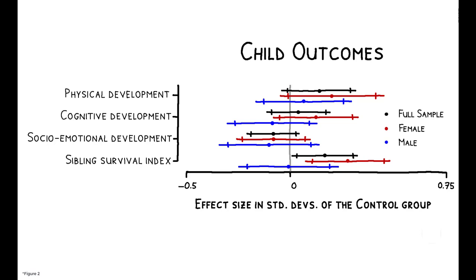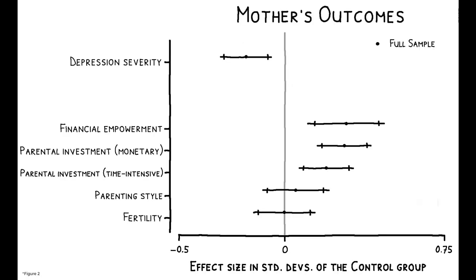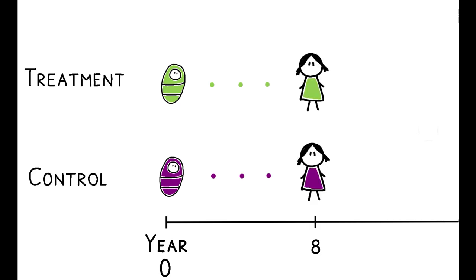But after investigating several potential explanations, the authors conclude that either the additional parental investments were simply ineffective at promoting child development, or that it is still too early to discern divergent effects for treatment and control children that may only appear at later ages.